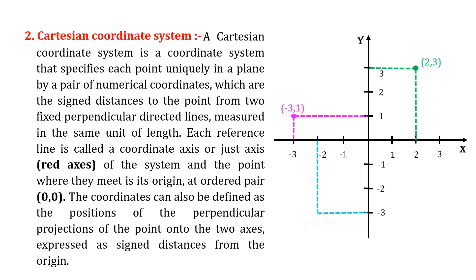Each reference line is called a coordinate axis or just axis of the system, and the point where they meet is its origin, an ordered pair (0,0). The coordinates can also be defined as the positions of the perpendicular projections of the point onto the two axes, expressed as signed distances from the origin.